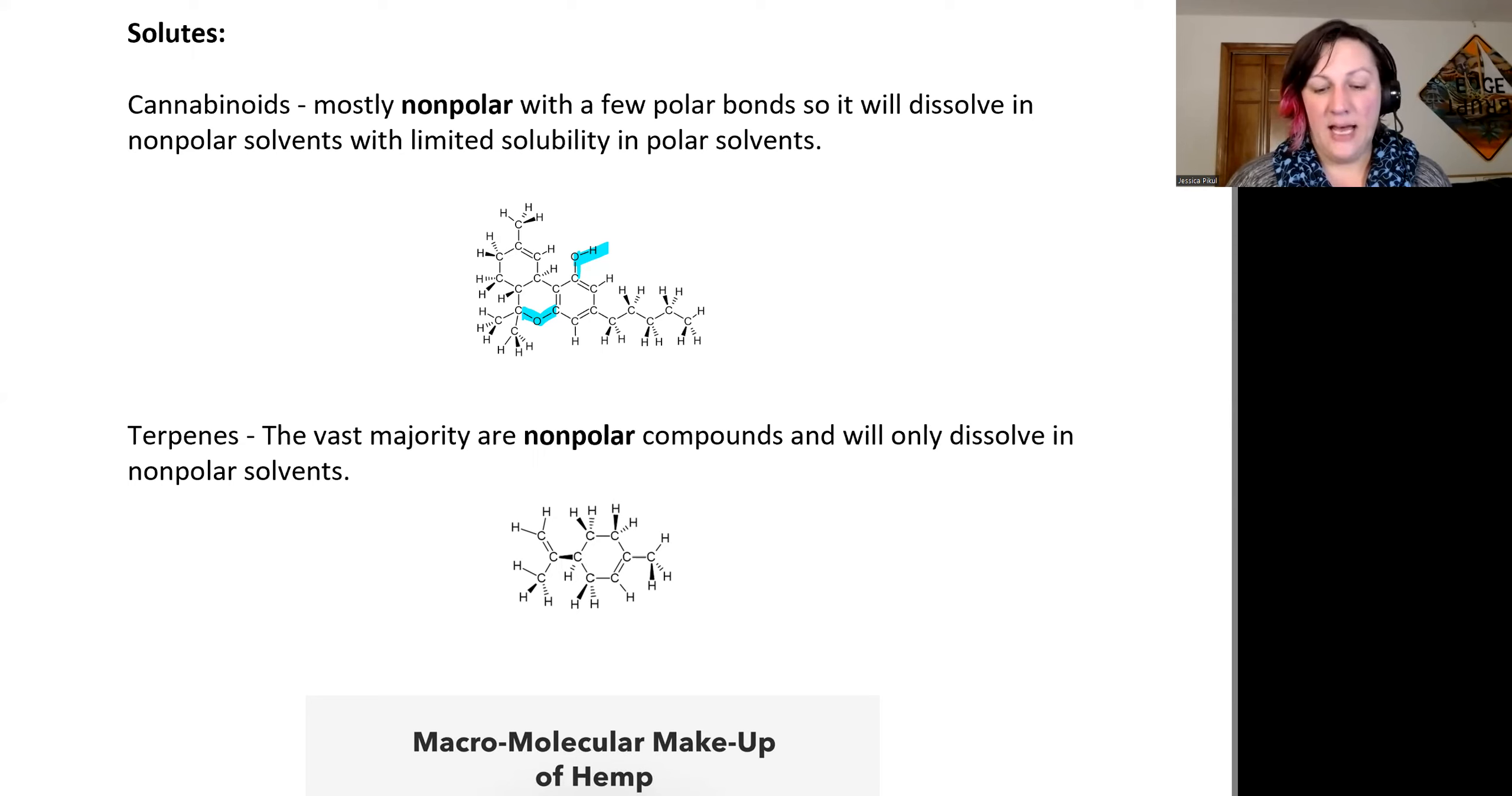Then we have terpenes, and they're very similar. They're smaller molecules and so they are nonpolar typically. A few of the terpenes that exist will have an OH bond or a polar bond but will have a large number of nonpolar bonds as well. So they typically dissolve in just nonpolar solvents.